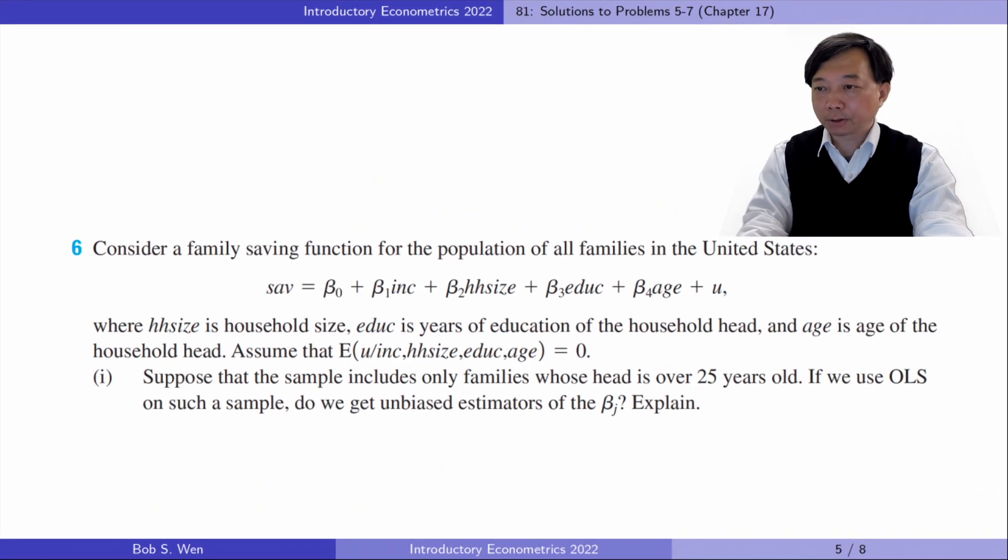Let's do problem 6. Consider a family saving function for the population of all families in the United States. Household size is household size. Edu is years of education of the household head and age is the age of the household head. Assume that the expected value of the conditional error term is 0. In part 1, suppose that the sample includes only families whose head is over 25 years old. If we use OLS on such a sample, do we get unbiased estimators of the betas? Explain.